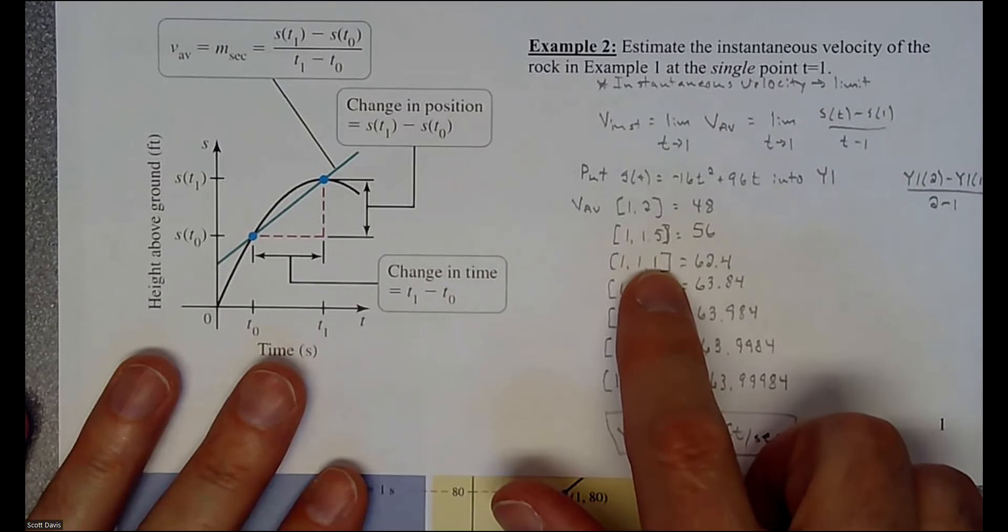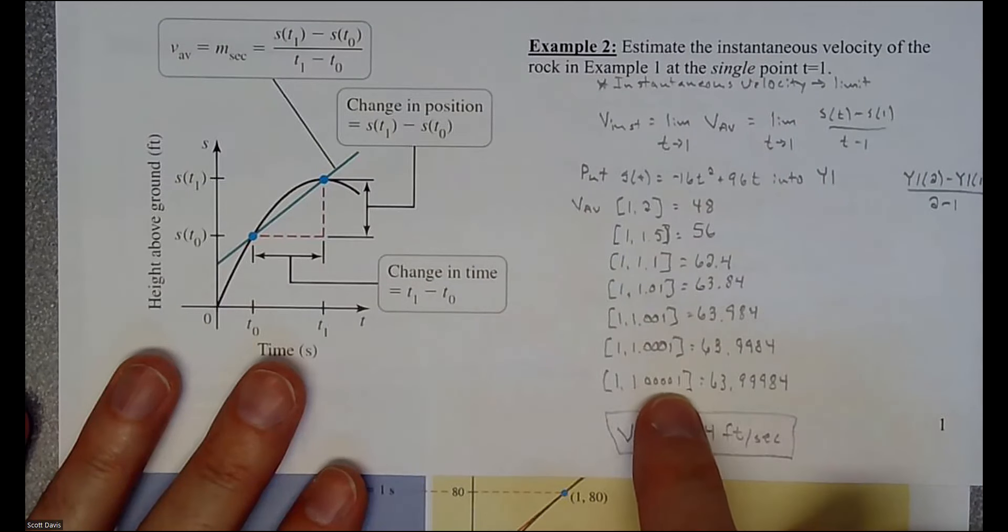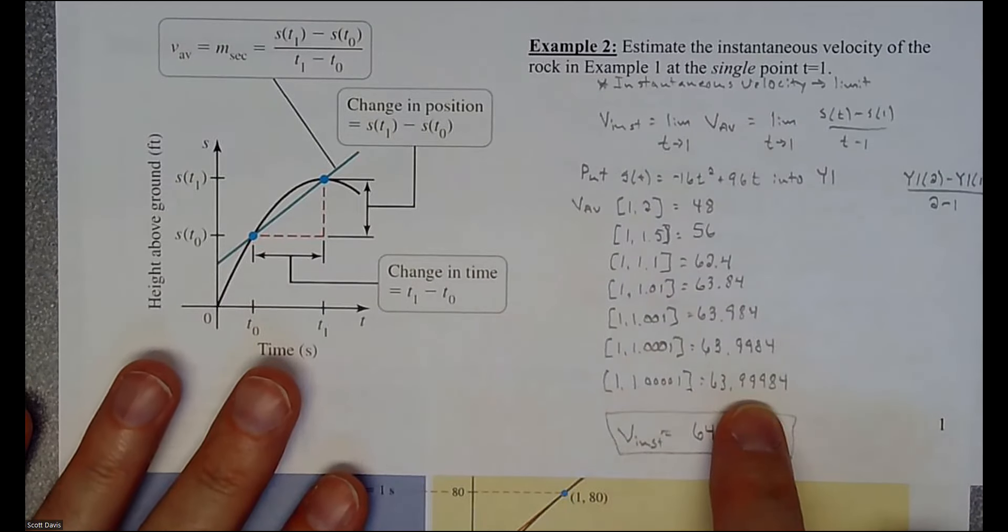So we're going to take the two, make it a 1.5, 1.1, and we're going to squeeze it, squeeze it, squeeze it, which is making our slope become a specific value.